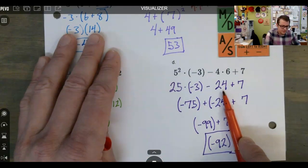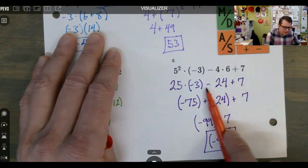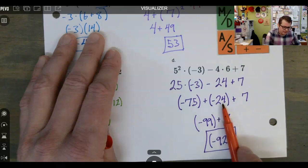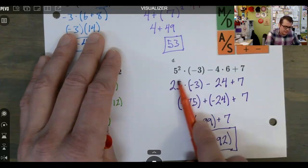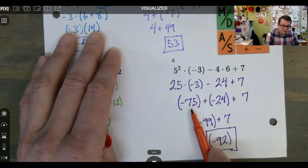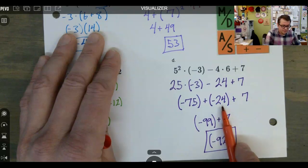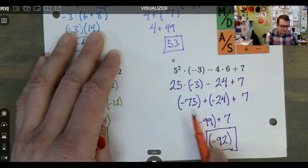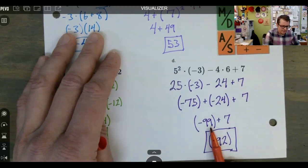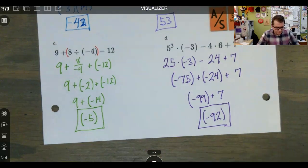And then we got a plus seven, just going to bring that down. So now my minus 24, we're going to rewrite as negative 24. The multiplication that still needs done over here comes out to be negative 75. So now I've got negative 75, negative 24, and a positive seven. I think my negatives are going to win here. So my negatives team up to make negative 99 plus seven, and we get negative 92 guys.